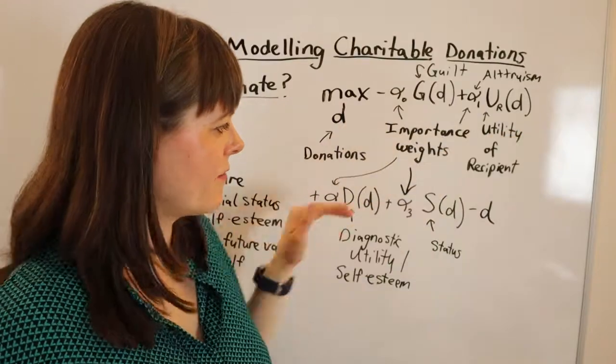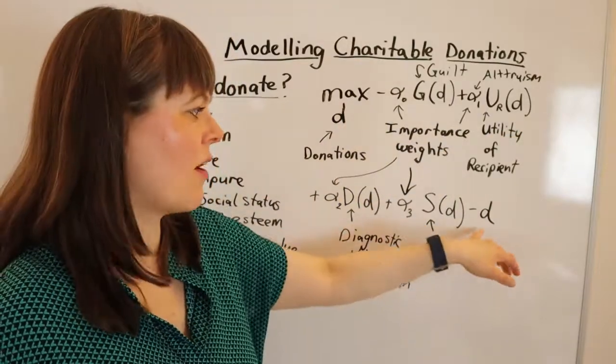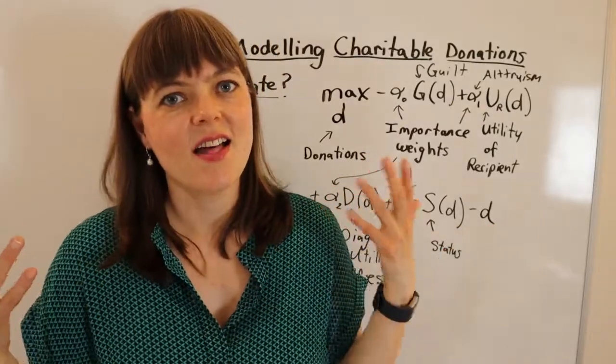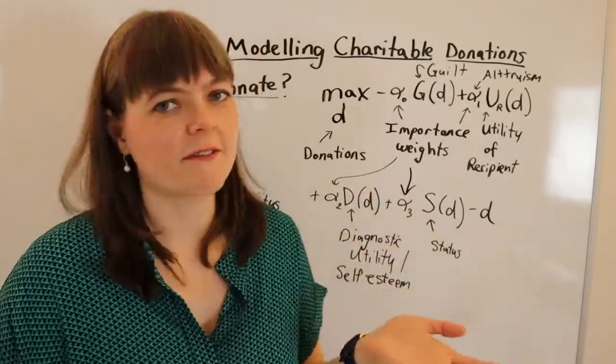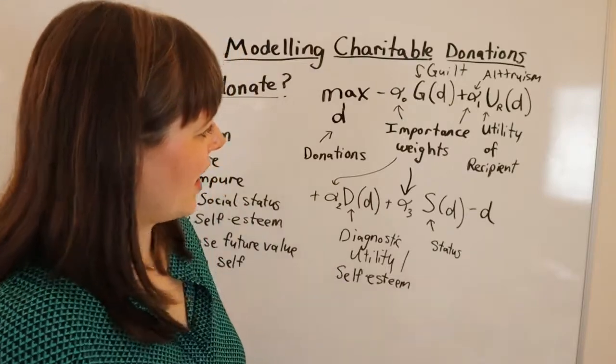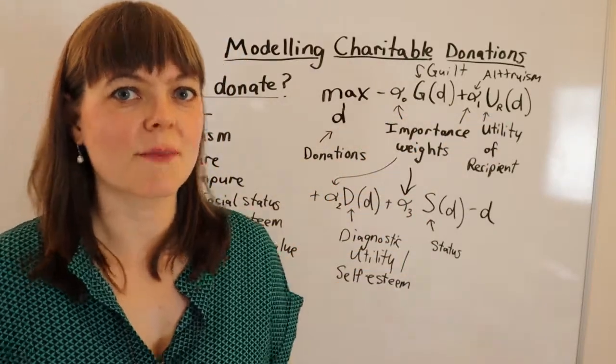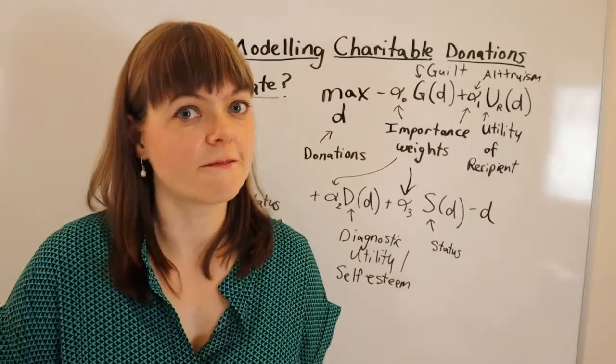But the simplest way is just to say minus D minus the donations. So the benefit of donating all these other factors needs to be enough to equal the cost of donating. That will give you your cost benefit analysis in this model. And you could analyze each of these parts separately, which I'm going to do in separate videos.